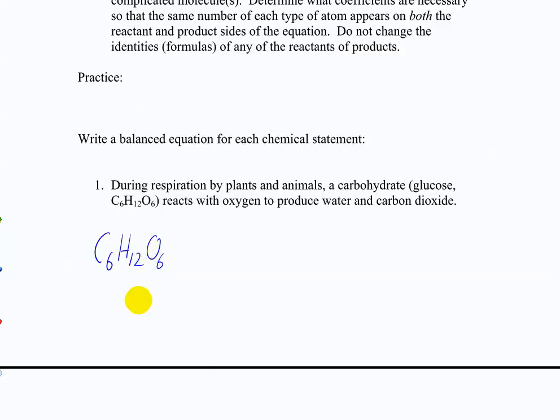And what is the state of glucose, do you think? It's a solid, but in a plant, in respiration, it's probably actually in a solution. And then this reacts with oxygen, which is what? Oxygen is a gas, and produces water, which is a liquid, and carbon dioxide, which is another gas. So we've described the reaction through an equation. Is it balanced?